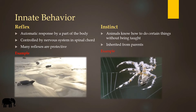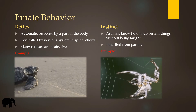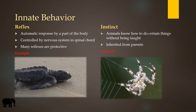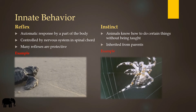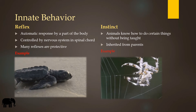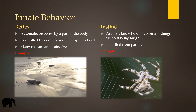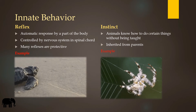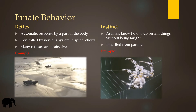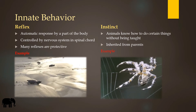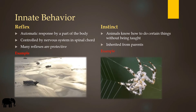There are two types of innate behavior: reflex and instinct. A reflex is an automatic response by a part of the body. It is controlled by the nervous system in the spinal cord. Many reflexes are protective.